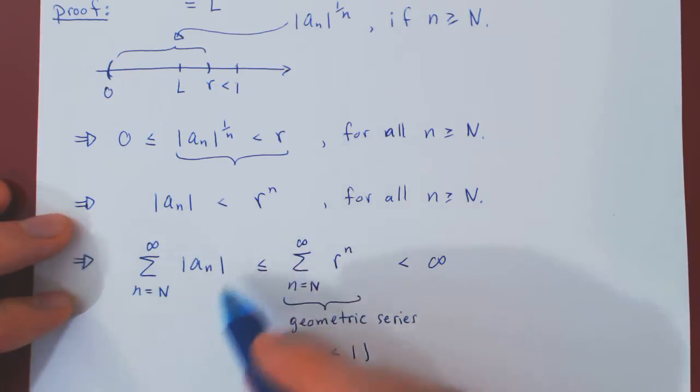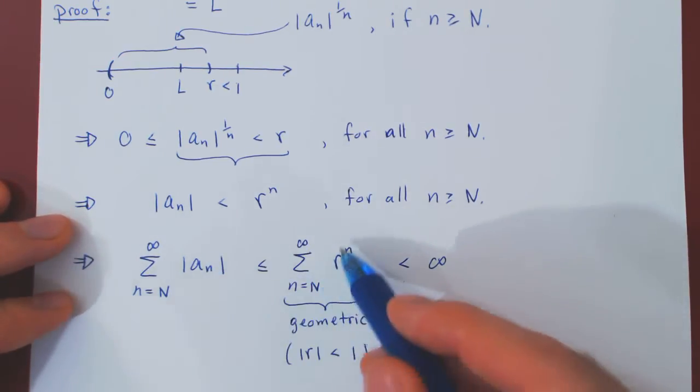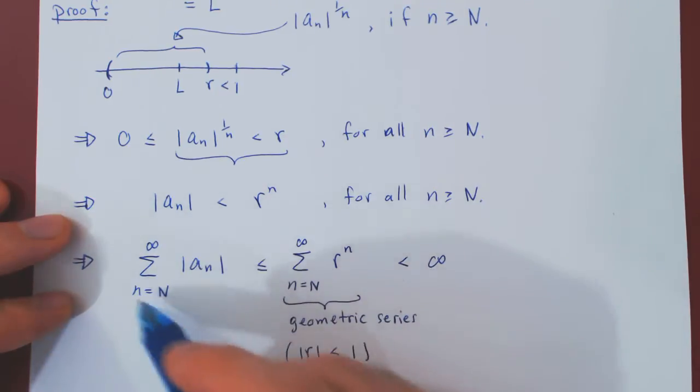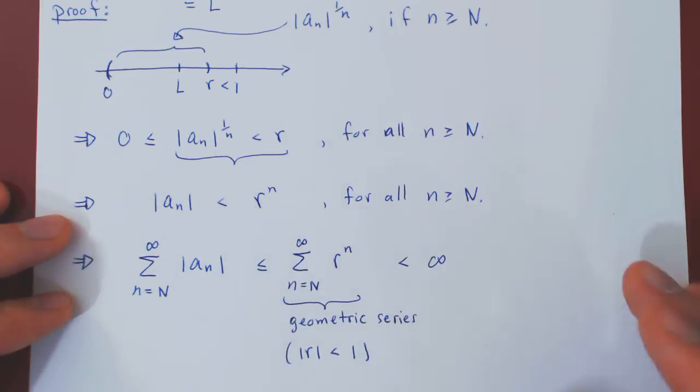But this sum, this infinite series, is less than this infinite series, which is finite. So this series, being at most this one, must also be finite.